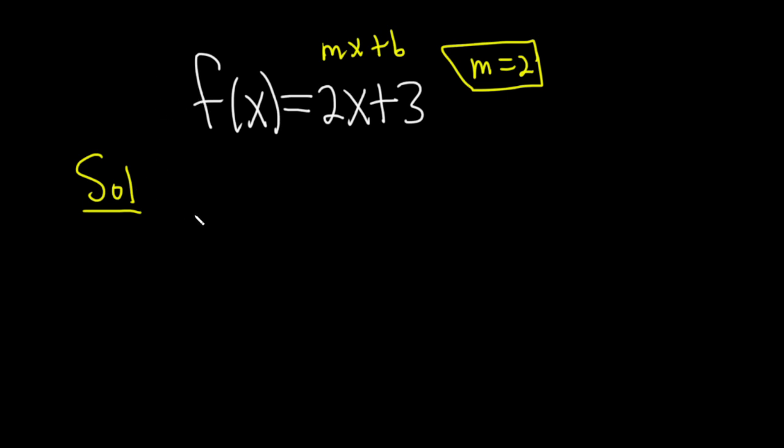So recall that the derivative of a function at x is given by the following formula. It's the limit as h approaches 0 of f of x plus h minus f of x all over h. And this is basically the slope of the secant line connecting the points x and x plus h. If you know the derivation, you'll remember where this comes from. But very powerful stuff.